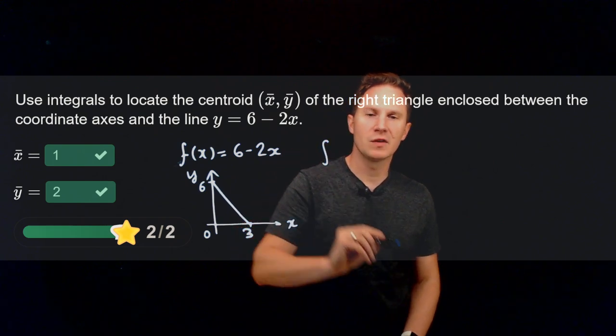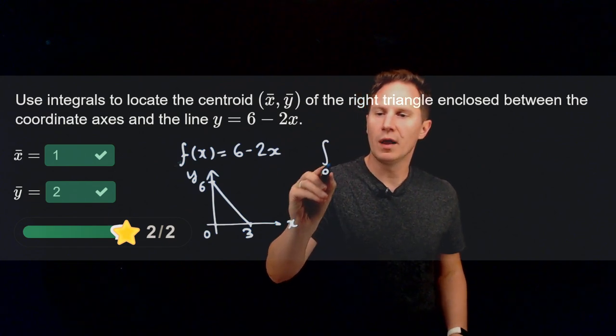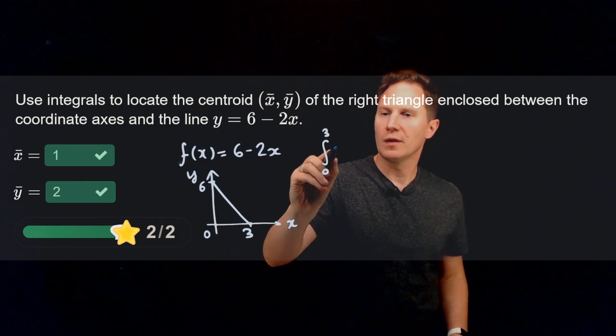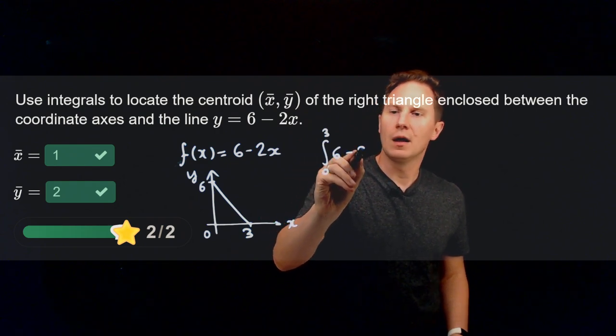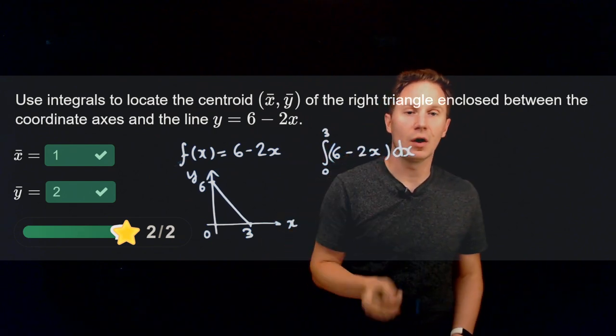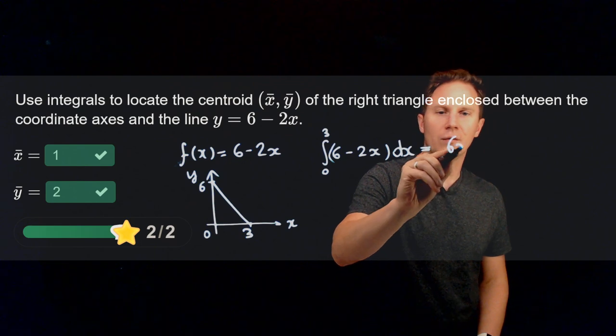First, for the denominators in both coordinates of the centroid, we need to evaluate the integral from 0 to 3 of f(x) dx. So that's from 0 to 3 of 6 minus 2x dx. So this is basically the area of that triangle, but let's just evaluate it as we would any integral.